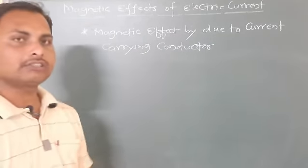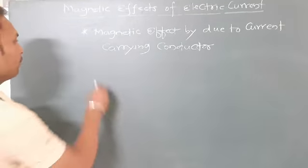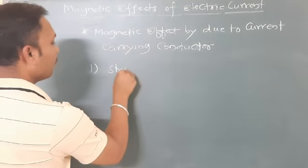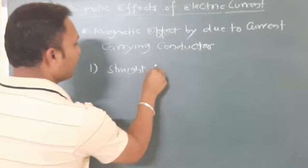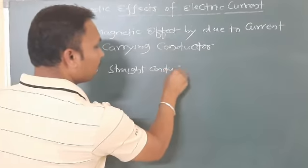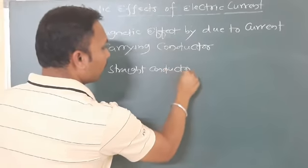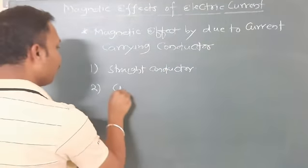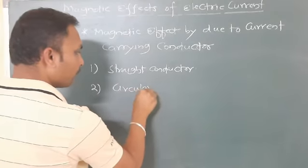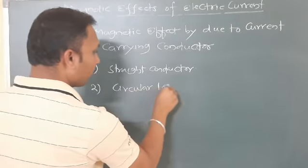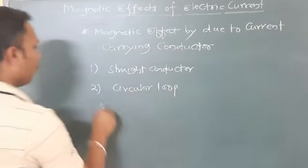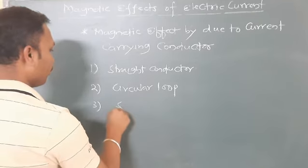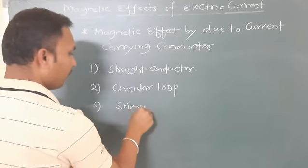In this we have three types. The first one is a straight conductor. The second one is circular. And the third one is a solenoid.